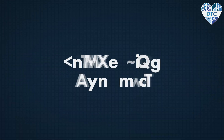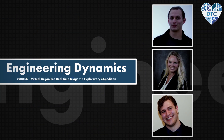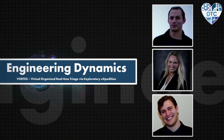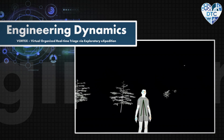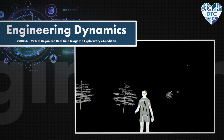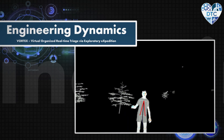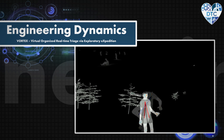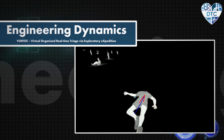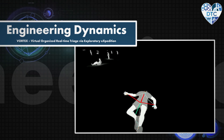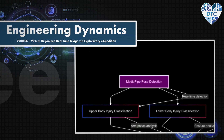Team Engineering Dynamics believes engineering is a people problem, so the team includes a sociologist and psychologist. Their strategy focuses on what the end user would need. The Engineering Dynamics team is a multidisciplinary group of engineers, artificial intelligence and machine learning specialists, as well as human sciences experts.